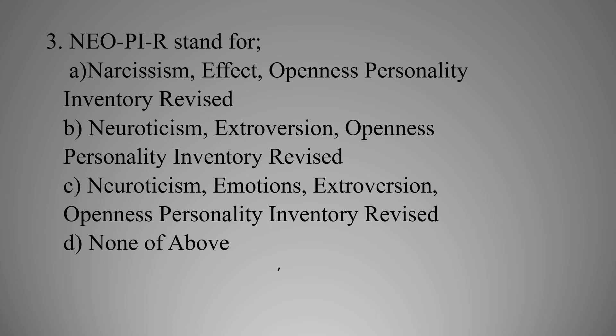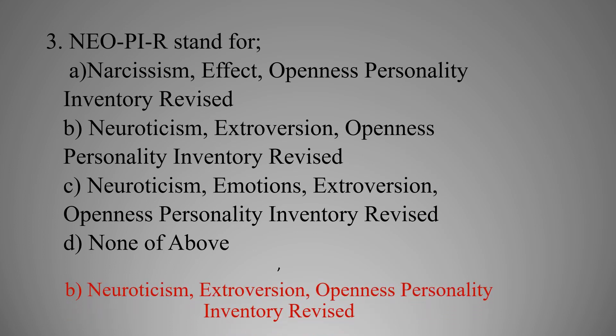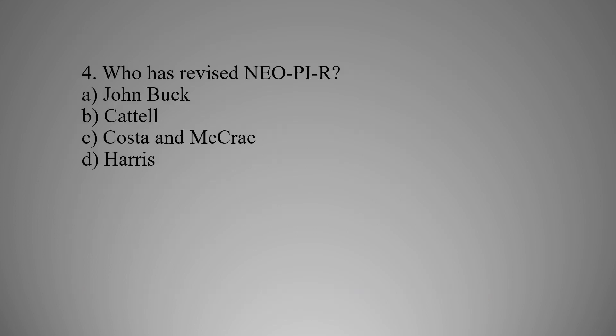MCQ number three: NEO-PIR stands for — Option A: Narcissism Effect Openness Personality Inventory Revised, Option B: Neuroticism Extroversion Openness Personality Inventory Revised, Option C: Neuroticism Emotions Extroversion Openness Personality Inventory Revised, Option D: None of the above. The right option is B — Neuroticism Extroversion Openness Personality Inventory Revised.